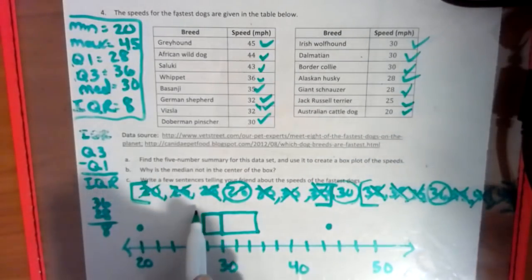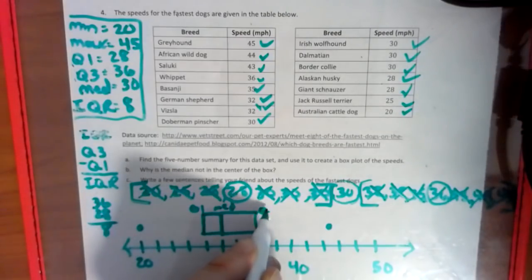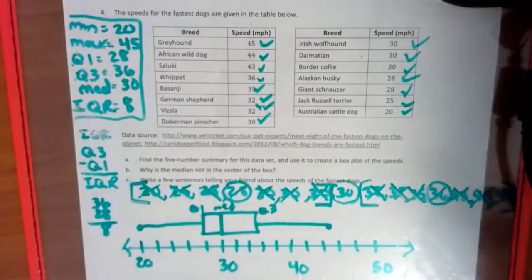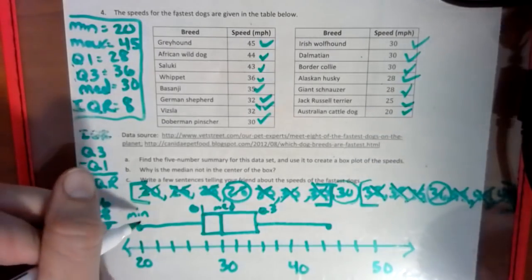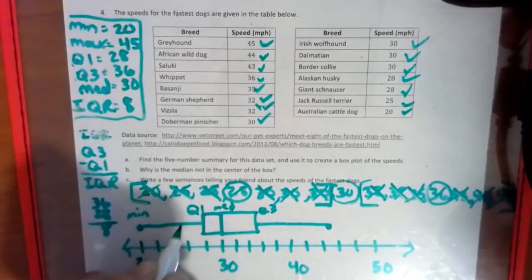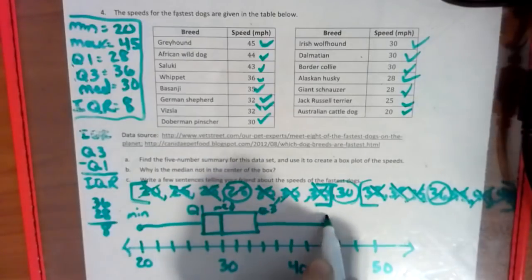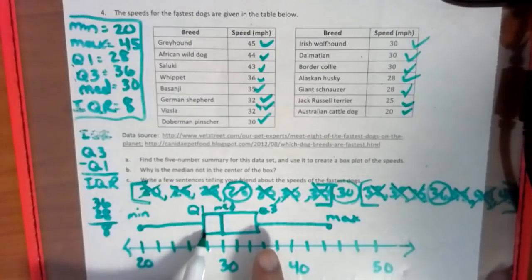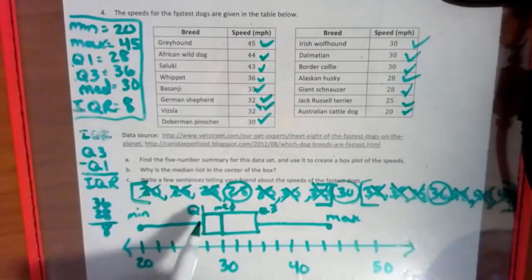So Q1, median, Q3, whisker. Once again, min—I'm going to rewrite this one so it looks better—Q1, median, Q3, max. This is the inner quartile range. Remember we said this was eight, so between here and here there should be eight: two, four, six, eight. So we know that we were correct.